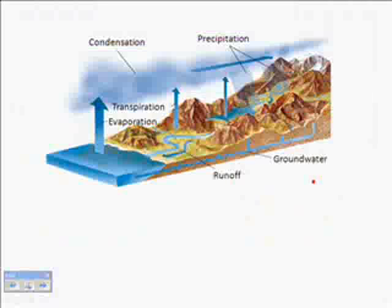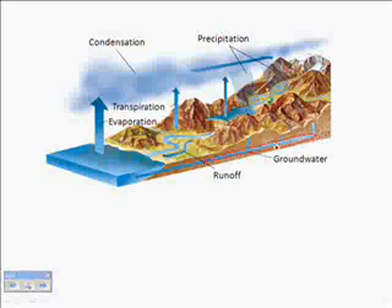Now we're going to look at Earth's surface and the water cycle. It's important to know that most of Earth's fresh water is in glaciers. Most of the liquid fresh water is actually in groundwater — not in lakes or rivers, but in the ground, mixed in with the dirt and rocks.